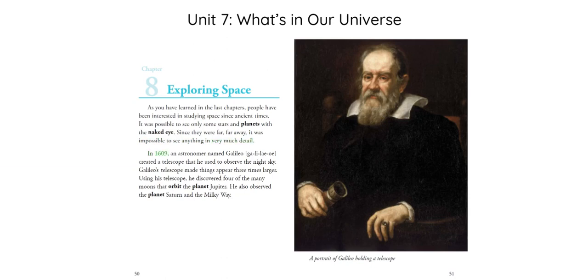In 1609, an astronomer named Galileo created a telescope that he used to observe the night sky. Galileo's telescope made things appear three times larger. Using his telescope, he discovered four of the many moons that orbit the planet Jupiter. He also observed the planets Saturn and the Milky Way.